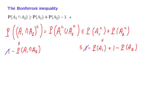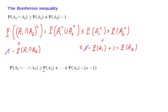It turns out that this inequality has a generalization to the case where we take the intersection of n events, with the same intuitive content. Suppose that each one of these events, A1 up to An, is almost certain to occur — it has probability close to 1. In that case, the sum of probabilities will be close to n. We subtract n minus 1, so the right-hand side will be close to 1. Therefore, the probability of the intersection will be larger than or equal to something close to 1 — essentially, big sets intersected together yield a big intersection.